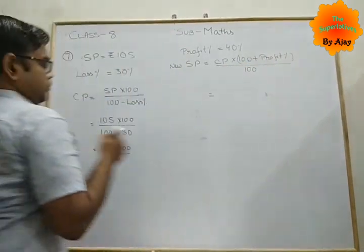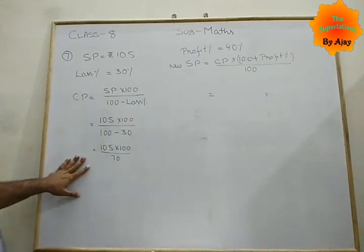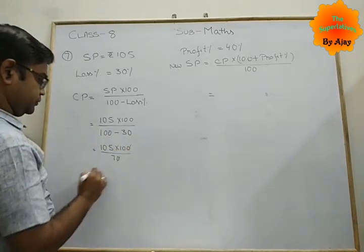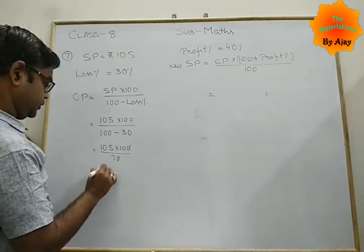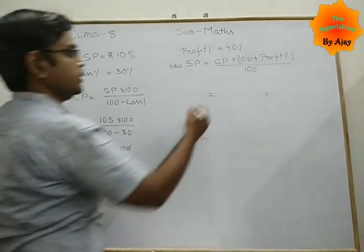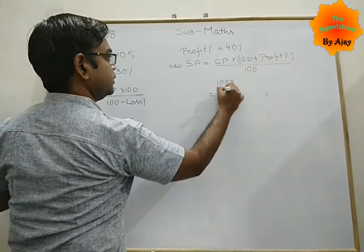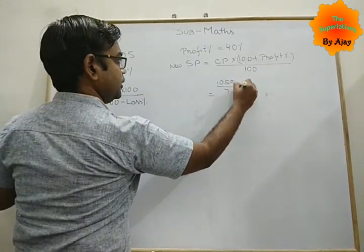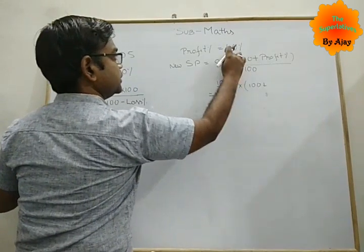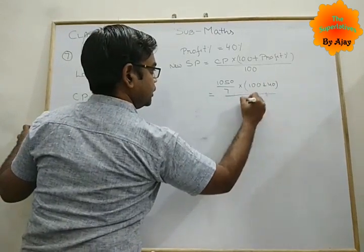Now find out. First place these values. If you want to simplify, you can simplify. It's 1050 by 7. Now come that up. CP equals 1050 by 7, into in bracket 100 plus profit percent that is 40, upon 100.